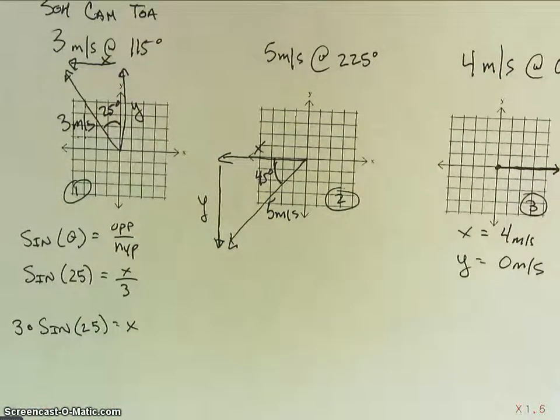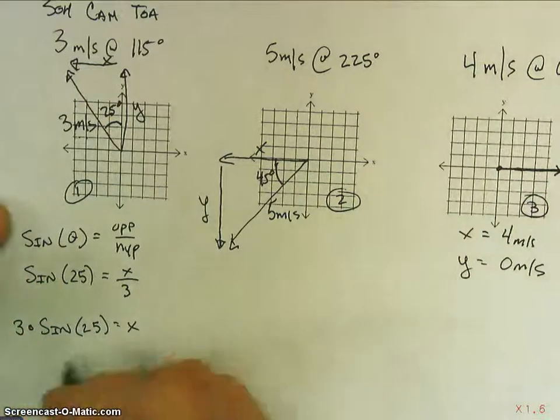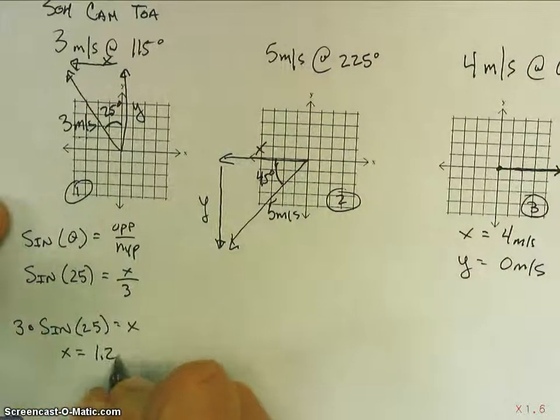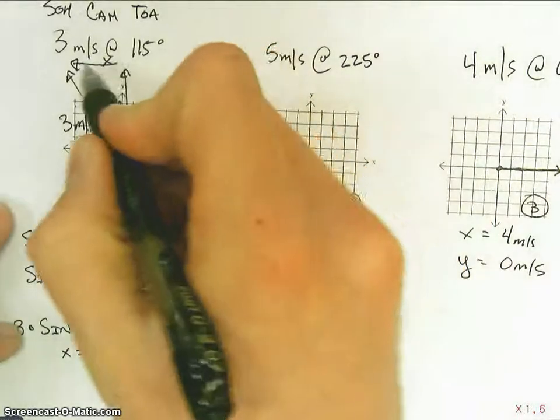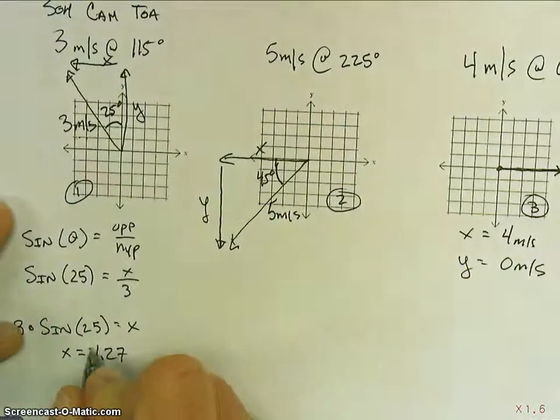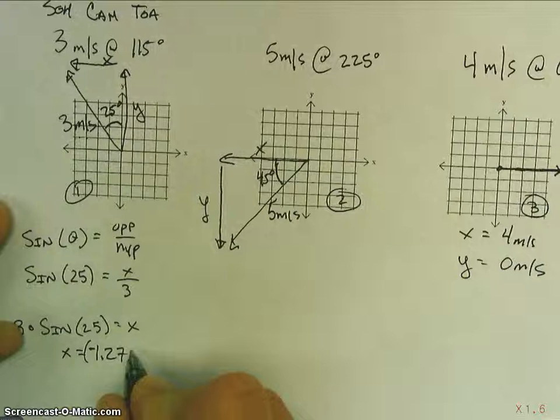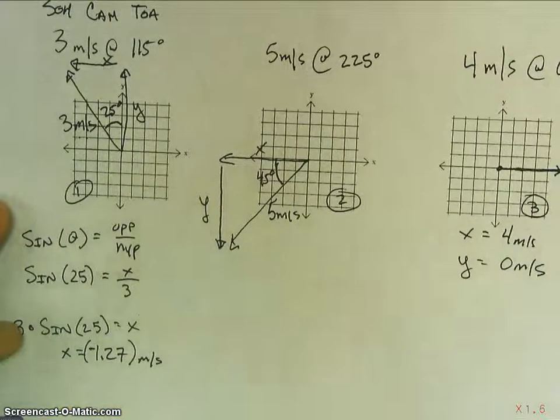3 times sine of 25, I get 1.27 meters per second. Now, we've got to pay attention because if I look at my diagram, my x here is actually negative. So, I have to keep that in mind.